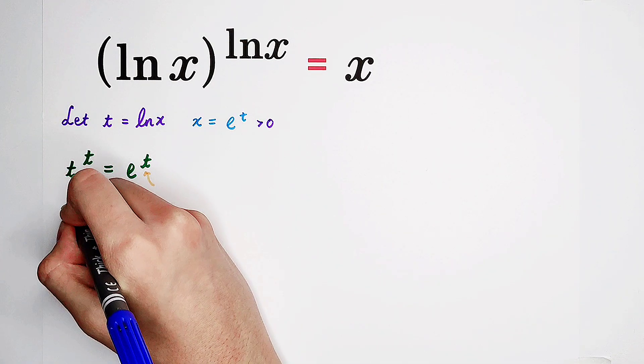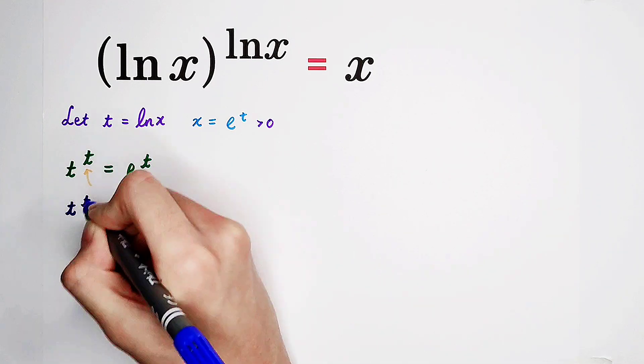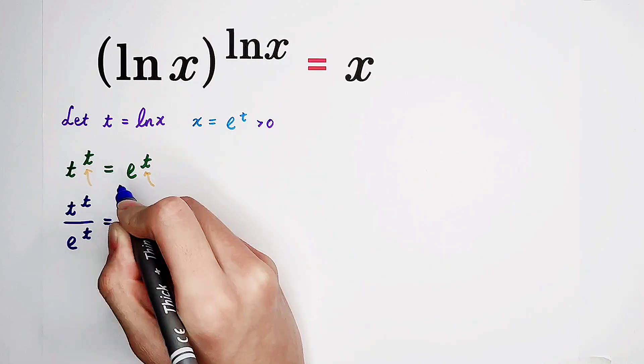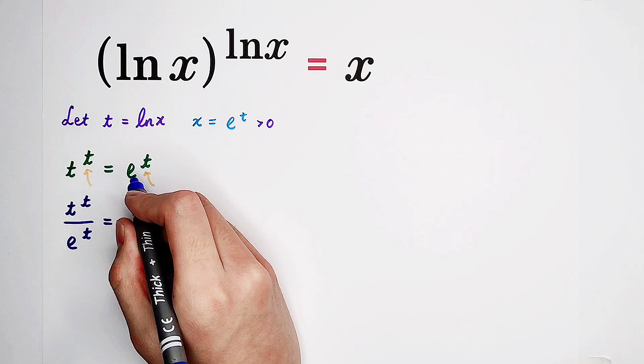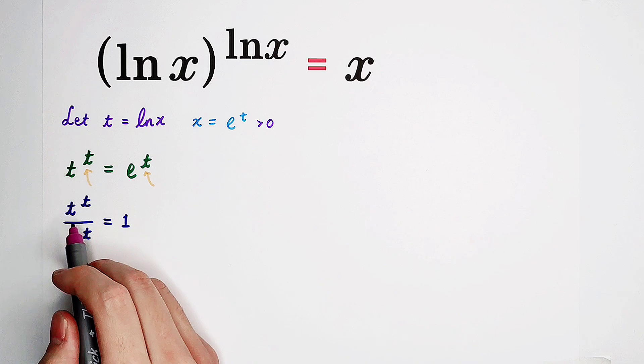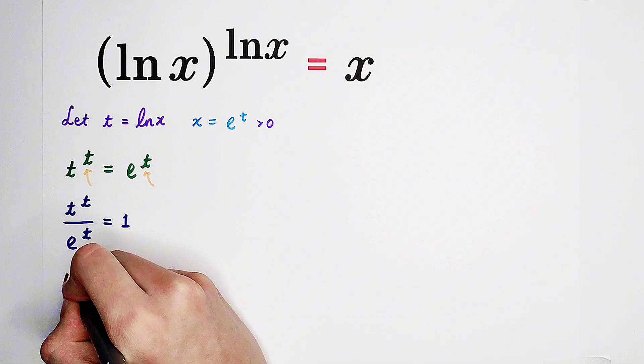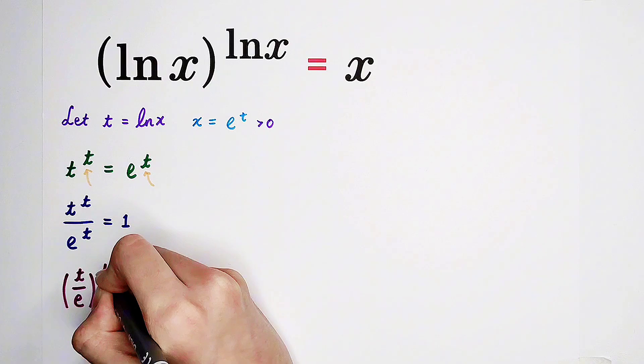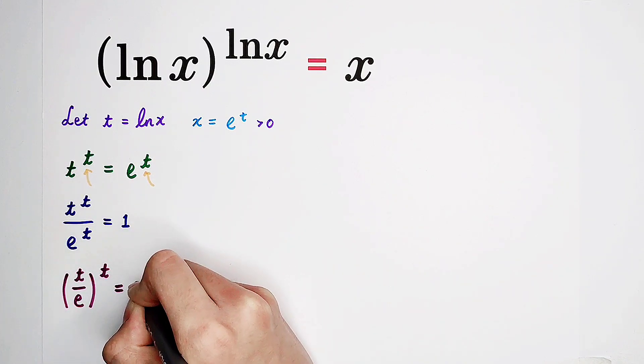So here we have t to the power of t over e to the power of t. And the right hand side is just e to the power of t over e to the power of t, which is 1. Then, the exponent t can be taken out. So t over e, to the power of t, equals 1.